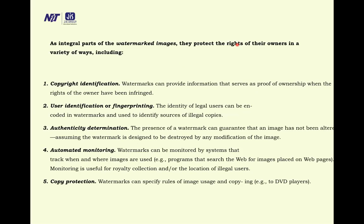One way to discourage illegal duplication is to insert one or more items of information collectively called a watermark into potentially vulnerable images in such a way that the watermarks are inseparable from the images themselves. An integral part of the watermarking images, they protect the rights of their owners in a variety of ways, including copyright identification, user identification or fingerprints.